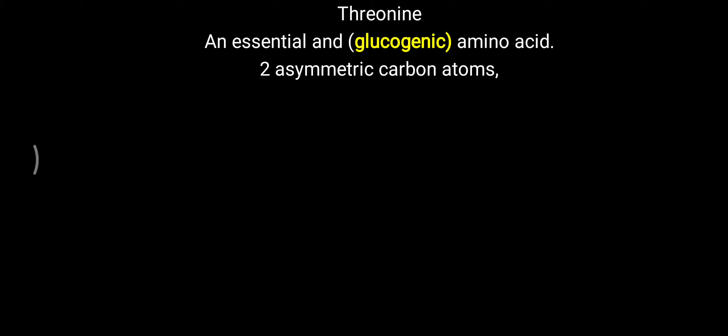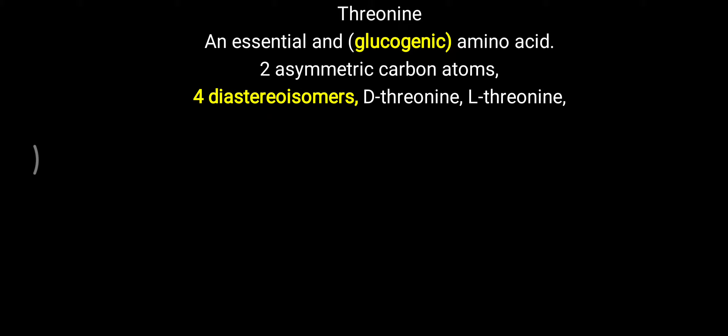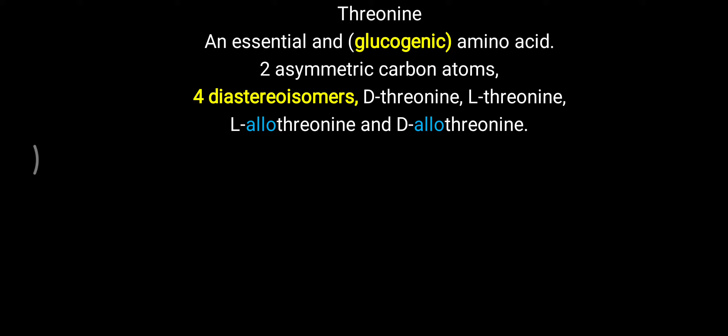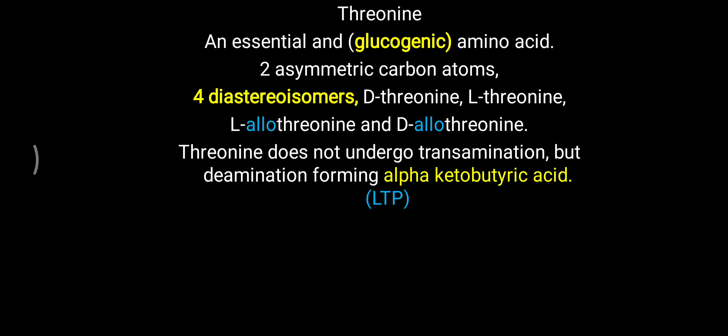One important point to remember about threonine is that it has two asymmetric carbon atoms. Due to these two asymmetric carbons, it forms four diastereoisomers. These four diastereoisomers are called D-threonine, L-threonine, L-allothreonine, and D-allothreonine. Sometimes it is asked: which amino acid has four diastereoisomers? The answer is threonine.